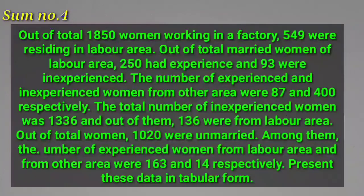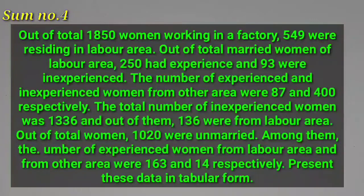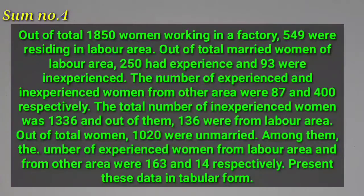Out of total 1850 women working in a factory, 549 were residing in labour area. Out of total married women of labour area, 250 had experience and 93 were inexperienced. The number of experienced and inexperienced women from other area were 87 and 400 respectively. The total number of inexperienced women was 1336 and out of them 136 were from labour area. Out of total women, 1020 were unmarried. Among them, the number of experienced women from labour area and from other area were 163 and 14 respectively. Present these data in tabular form.